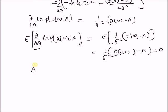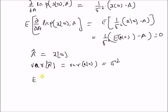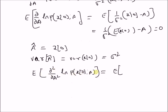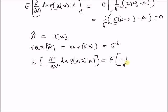We know that the estimator of parameter a, a-hat = x(0), is the maximum likelihood estimator. The variance of a-hat equals the variance of the observation, which is sigma-squared. Next, the expectation of the second derivative with respect to a of the log-likelihood is the derivative of (1/sigma-squared)*(x(0) - a), which gives minus 1/sigma-squared. So the expectation equals -1/sigma-squared.